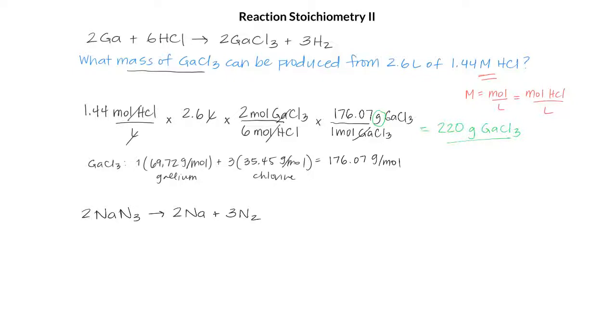Let's look at another example. Here we have 2 moles of sodium azide producing 2 moles of sodium and 3 moles of nitrogen gas. Let's calculate the mass of NaN3 that's required to produce 73.6 liters of N2 with a density of 1.25 grams per liter.